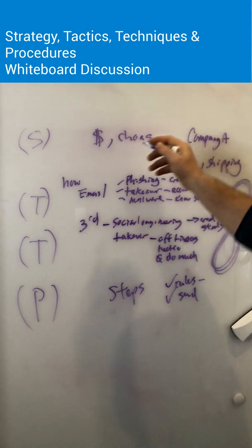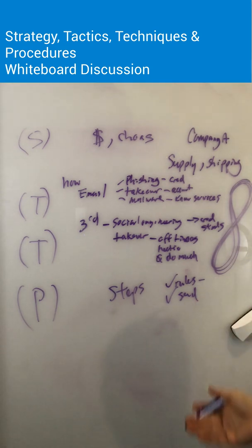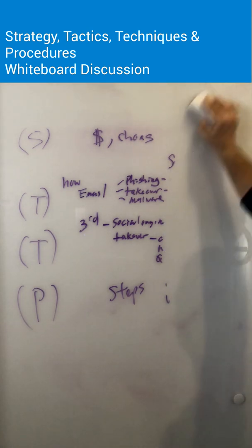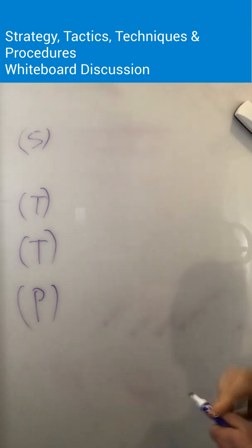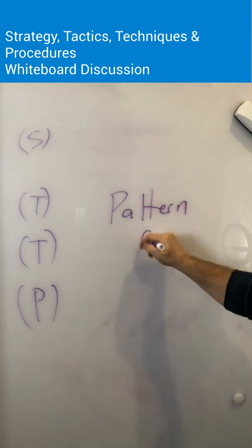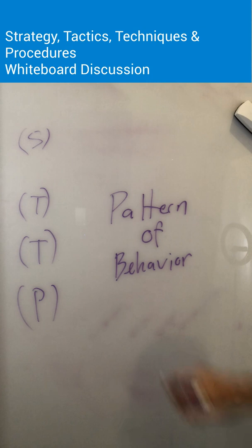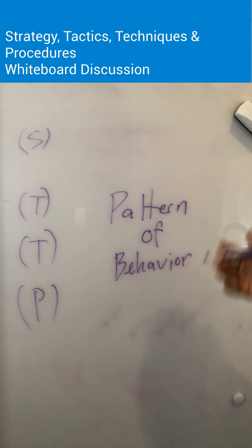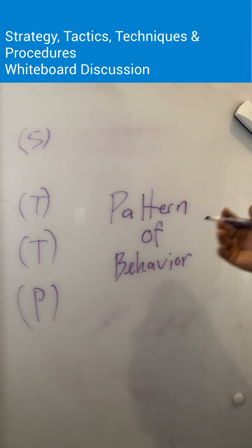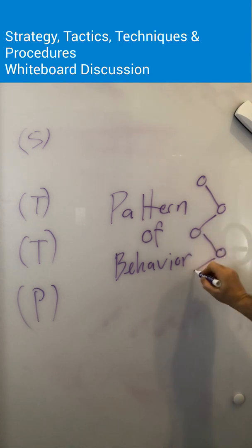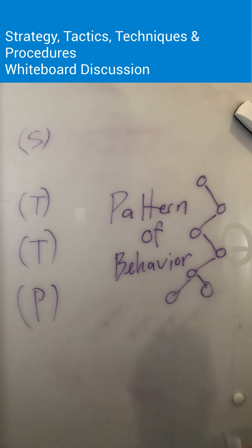Strategy, tactics, techniques, and procedures are part of what goes into an attacker's profile. You look at them as an organization and ask: how do they utilize things? What is effectively their pattern of behavior? Because that's what all of this is used to describe — a pattern of behavior. If you continue to use the same patterns of behavior over and over, you will get noticed, because defenders will be able to pick up on your actions, and we like that because it makes it easier for us.